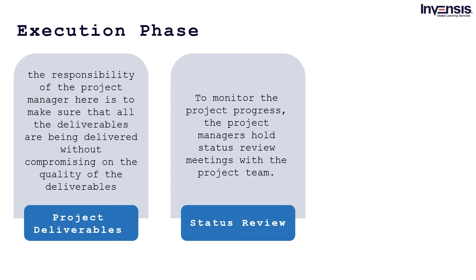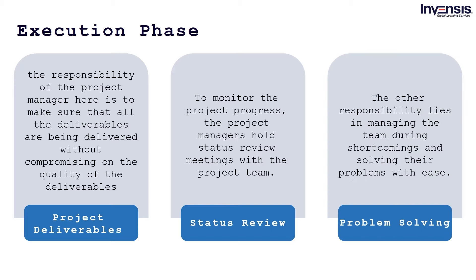The first objective in the execution phase is to get all the deliverables completed in due time. The project manager must make sure that all deliverables are being delivered without compromising on quality. To monitor project progress, project managers hold status review meetings with the project team — for example, a daily stand-up meeting that ensures timely updates on the status of work done. The project manager also manages the team during shortcomings and implements any contingency plans to ensure the project does not jeopardize overall progress before delivery.